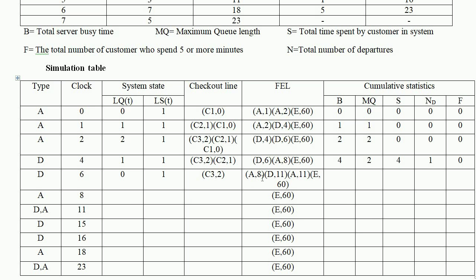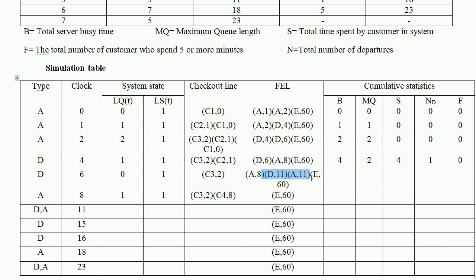At clock time 8, customer 4 arrives but customer 3 is still being served. So customer 3 is at the server (Ls=1) and customer 4 joins the queue (Lq=1). The future event list contains two events: departure at minute 11 and arrival at minute 11 — both D11 and A11.